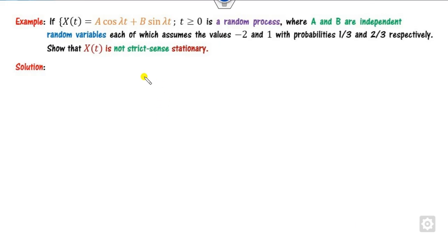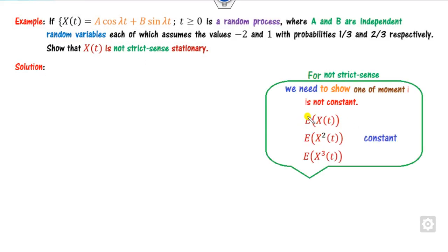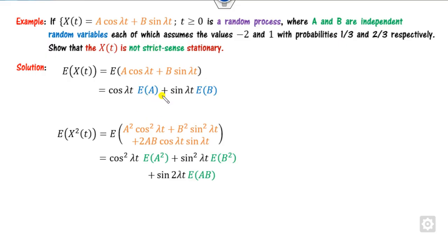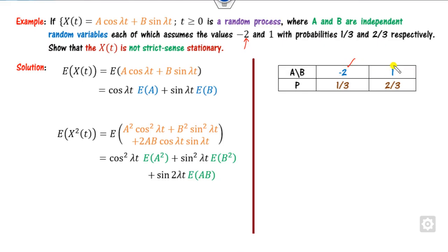Now consider an example where the target is to prove that X(t) is NOT a strict sense stationary process. This means you need to show that at least one of E[X], E[X²], E[X³], etc. is not constant. Starting with E[X(t)]: X(t) is given in terms of some expression involving t. Since t is a constant value for a given time, it can be taken outside the expectation. You then need to find E[A] and E[B], which are given in the problem.